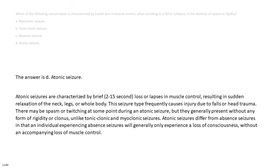The answer is D. Atonic seizure. Atonic seizures are characterized by brief, 2-15 second, loss or lapses in muscle control, resulting in sudden relaxation of the neck, legs, or whole body. This seizure type frequently causes injury due to falls or head trauma. There may be spasm or twitching at some point during an atonic seizure, but they generally present without any form of rigidity or clonus, unlike tonic-clonic and myoclonic seizures. Atonic seizures differ from absence seizures in that an individual experiencing absence seizures will generally only experience a loss of consciousness, without an accompanying loss of muscle control.